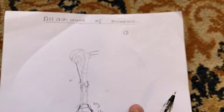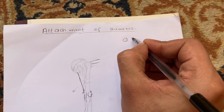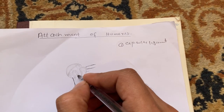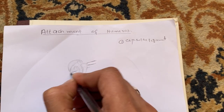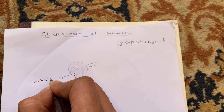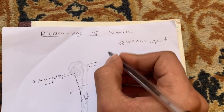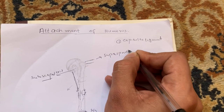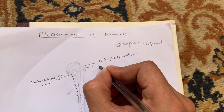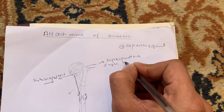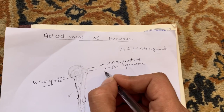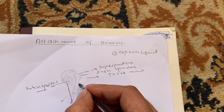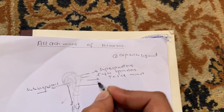In summary of muscle attachments: the surgical neck is related to the capsular ligament of the shoulder joint. The lesser tubercle gives insertion to subscapularis. The greater tubercle gives three impressions: supraspinatus superiorly, infraspinatus in the middle, and teres minor inferiorly. The floor of the bicipital groove gives insertion to latissimus dorsi.